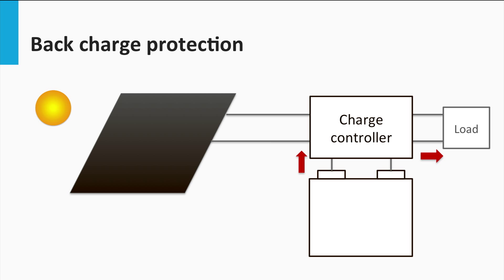Traditionally, blocking diodes are used at the PV panel or string level to prevent the supposed back discharge of the battery through the PV array. This function is also easily integrated these days via the charge controller.